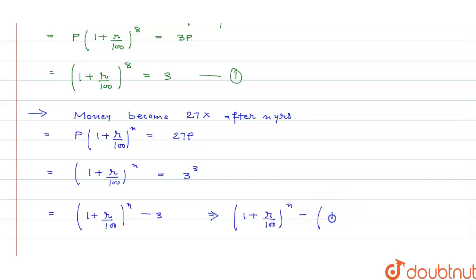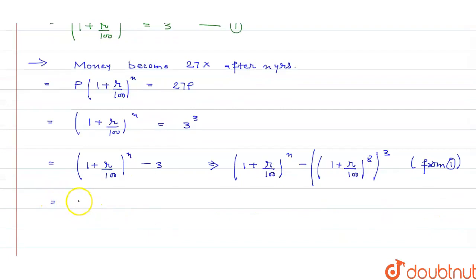That is, (1 + r/100)^n = 3^3 = [(1 + r/100)^8]^3 = (1 + r/100)^24. Therefore n = 24. That means after 24 years...